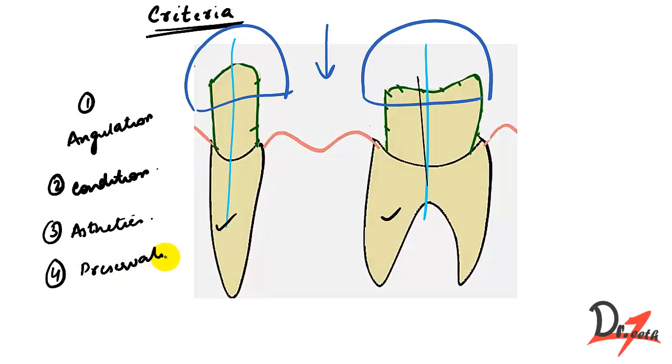Preservation: how much tooth structure we want to preserve here. The partial veneers are more conservative because we are leaving one or other surface of teeth intact and we are preparing rest of the surface. Partial veneer are more conservative than full veneer. Then we have retention, how much retention we want. Based on that we select the retainer.